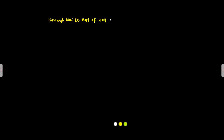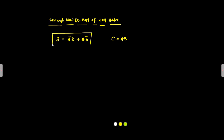We will now discuss the Karnaugh map (K-map) implementation of a half adder circuit. The two output expressions are: the sum output, which is Ā·B + A·B̄, and the carry, which is simply A·B. The carry is straightforward — there is nothing to minimize or simplify — but we will still go through a systematic K-map.